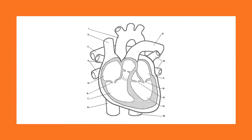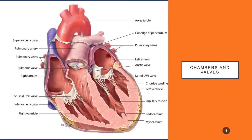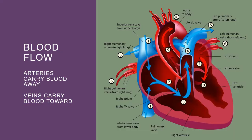You should be able to identify all of the structures of the cardiovascular system, especially the chambers and the valves, as well as understand the direction and flow of blood. Keep in mind that arteries carry blood away from the heart, and veins carry blood towards the heart, and neither has anything to do with oxygenation.